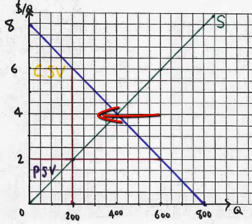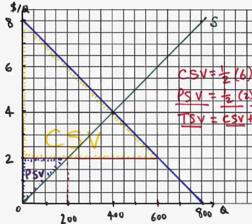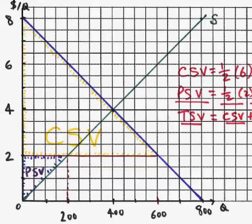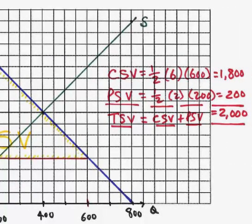Now let's consider a second country that can supply the excess demand at a price of 2. The distance between demand and supply at a price of 2 gives us an excess demand of 400 — demand being 600 and domestic supply being 200. The consumer surplus value is now a large triangle with a base of 600 and a height from 2 to 8, which is 6. So the area is one-half of 6 times 600, giving a consumer surplus value of 1800. The producer surplus value remains 200, giving a total surplus value of 2000.